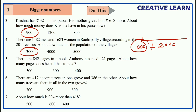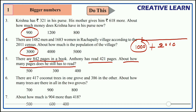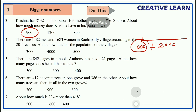Next question: there are 842 pages in a book. Anthony has read 421 pages. About how many pages does he still have to read? Total pages are 842 and pages read by Anthony are 421. We have to find the number of pages remaining to read — no need for exact values, just approximate values.